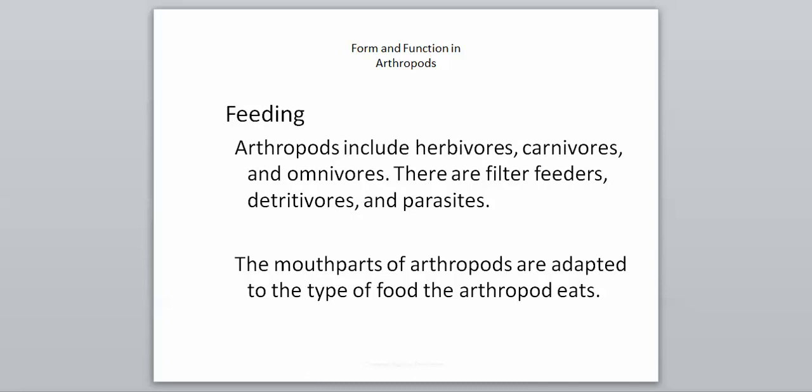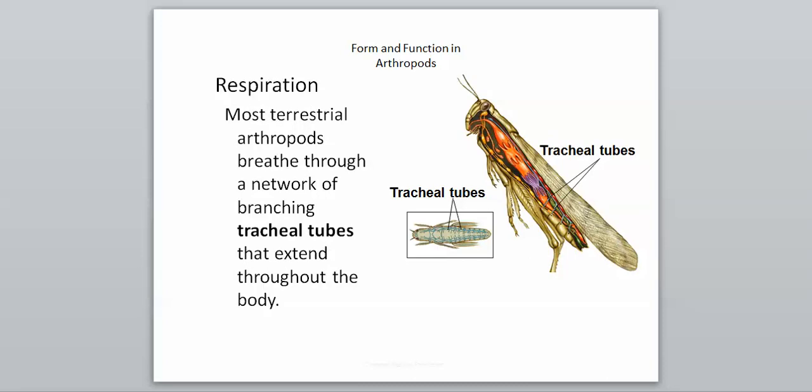In terms of feeding, arthropods run a wide range — basically every possible feeding technique is found in this group. There are herbivores, carnivores, and omnivores, as well as filter feeders, detritivores, and parasites. Since there are so many different types of feeding, the mouthparts of arthropods are adapted to the type of food that each specific arthropod eats, so every single one will have a different type of mouth depending on its diet.